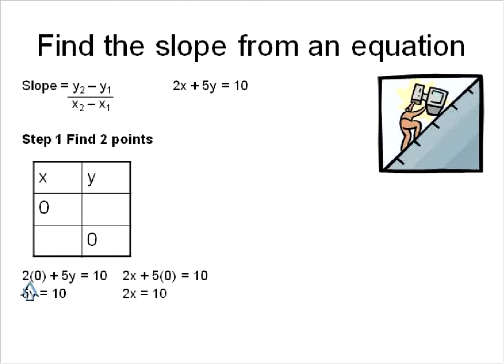5 times 0 removes itself. 2 times 0 gets rid of itself. And so I have 5y is equal to 10 and 2x is equal to 10. And I'll solve for x and y. On this side, I divide by 5. Both terms here divided by 5 will give me y is equal to 2, and that gives me the point 0, 2.